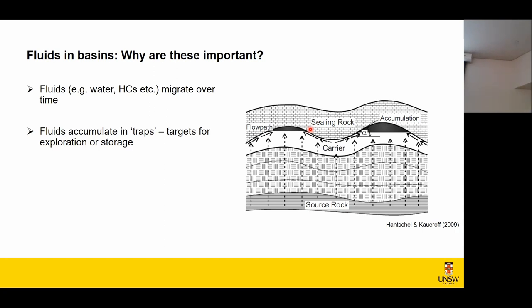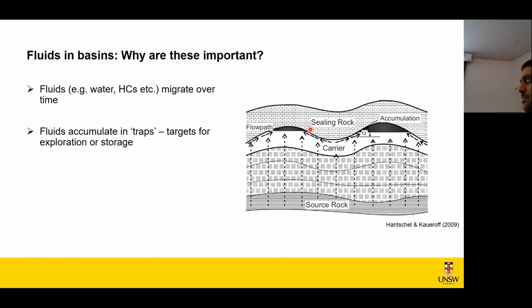The questions we had were: first, can we do something like this for other fluids besides hydrocarbons? And second, how does this work for fluids moving on human timescales? For CO2 and hydrogen storage, we're not interested in how fluids moved 100 million years ago — we're interested in where CO2 will go if injected into the ground today, over the next 50 to 100 years. How can we simulate this process for different fluids at different timescales?